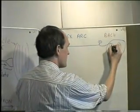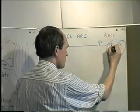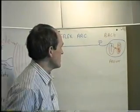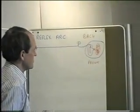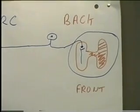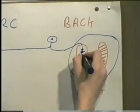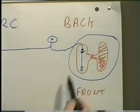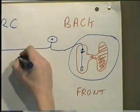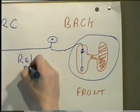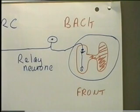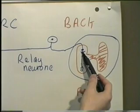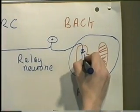It synapses with another neuron which carries it through the spinal cord. This will synapse again. The neuron carrying it through the spinal cord is referred to as a relay neuron, because it is carrying it through the spinal cord. So here we have the end part of the sensory neuron synapsing with the relay neuron, the relay neuron carrying the information across the spinal cord.